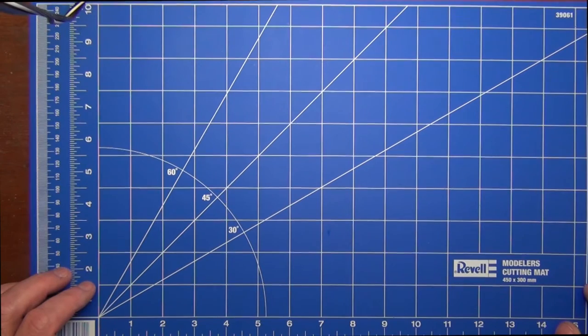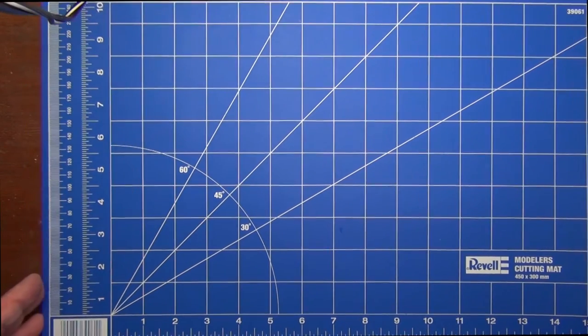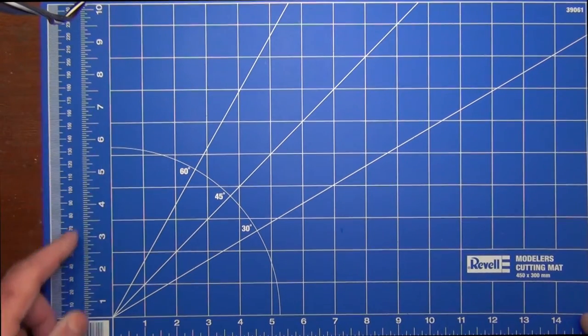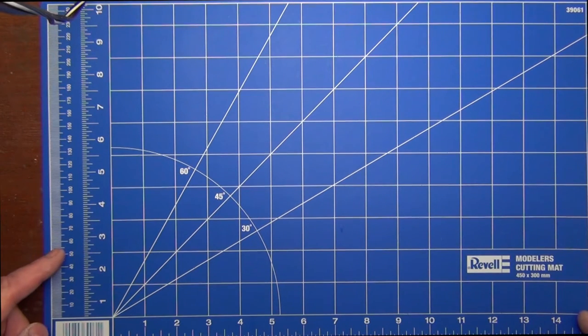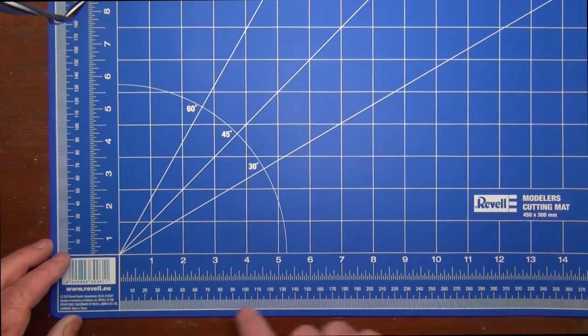On the left-hand side here, we've got two measurements—both metric and imperial. For imperial, we go up to 10 inches, and for metric, we go up to 240 millimeters. Down the bottom of the cutting mat as well, we've got